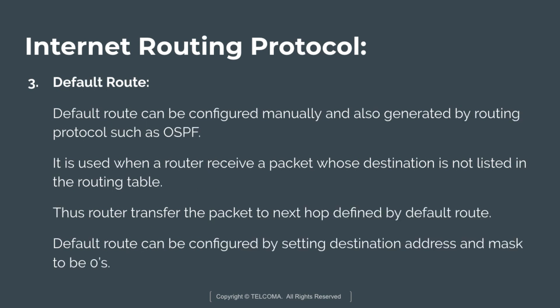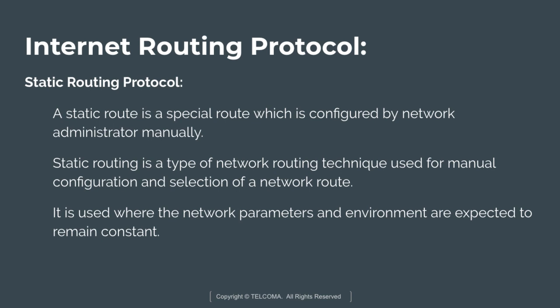The default route is a special kind of route. It can be configured manually and is also generated by routing protocols such as OSPF. It is used when a router receives a packet whose destination is not listed in the routing table, and the router transfers the packet to the next hop defined by the default route. The default route is configured by setting the destination address and subnet mask to zero.